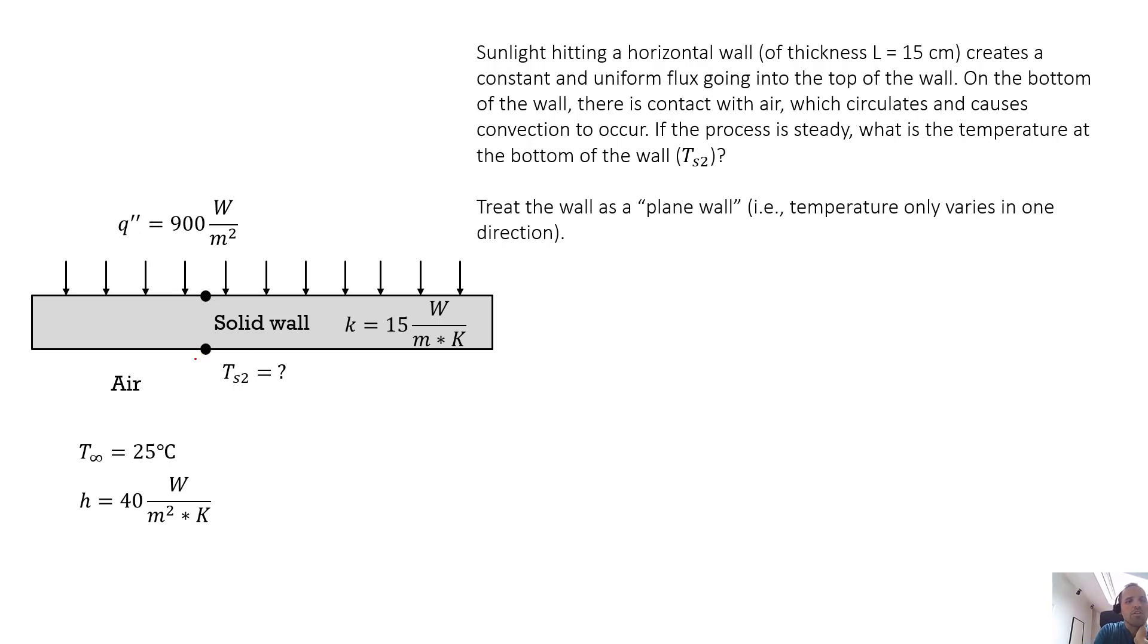So one thing we could do is just treat this whole wall as a control volume and we could think about this wall as our system. So let's write out the terms of our energy balance. We have accumulation, we have in, out, and generation. Let's get faster at doing this. So the process is steady, so accumulation is zero.